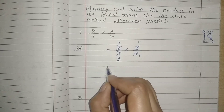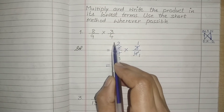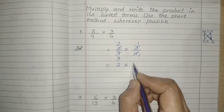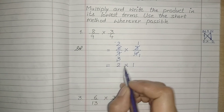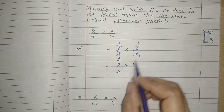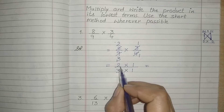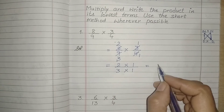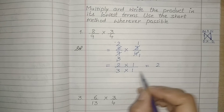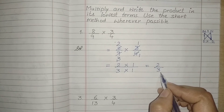So finally we will multiply the numerator numbers. The numerator left here is 2 and here is 1. In the denominator we have 3 and 1. So let us multiply numerators together: 2 ones are 2. And denominators together: 3 ones are 3. So finally the answer is 2 upon 3.